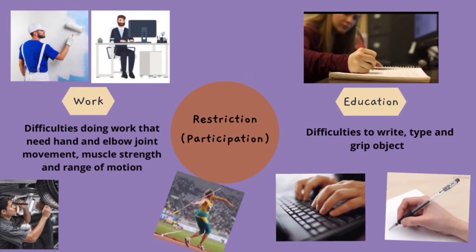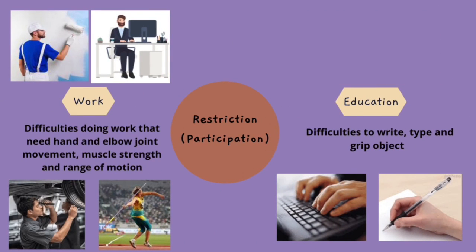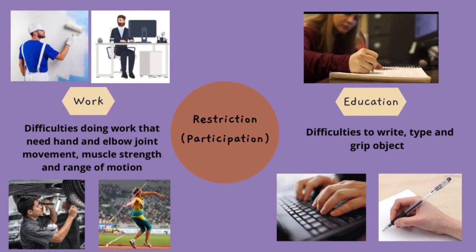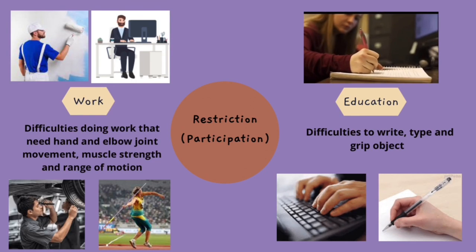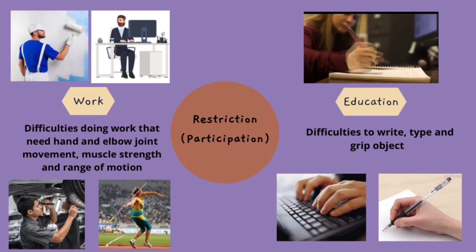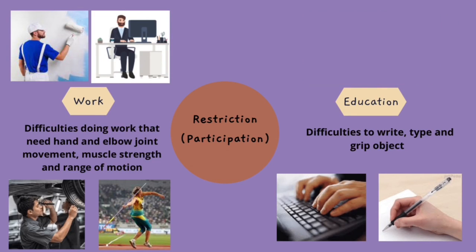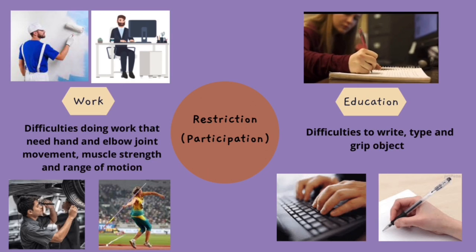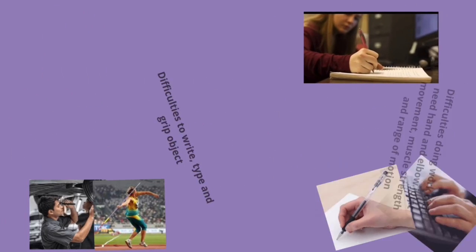For participation restrictions in work, the patient will have difficulties doing work that requires hand and elbow joint movement, muscle strength, and range of motion — for example, painters, office workers, mechanics, and athletes. In education, students will have difficulties writing, typing, and gripping objects such as pens.